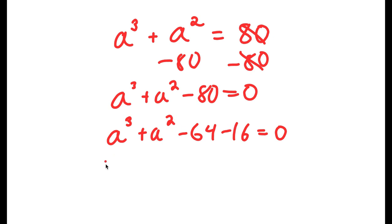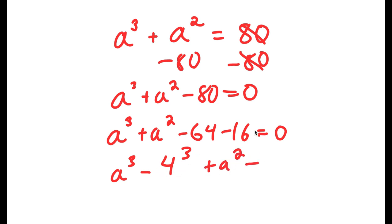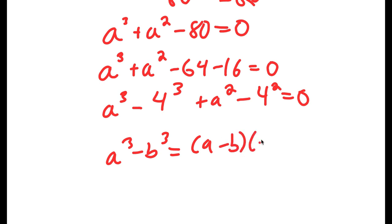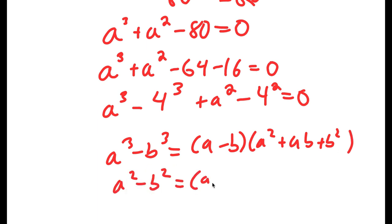Now, negative 64 I'll rewrite as negative 4 to the power of 3. So I have a cubed minus 4 cubed plus a squared minus 16, and I'll rewrite 16 as 4 squared. Now, if I have something in the form a cubed minus b cubed, that equals a minus b times a squared plus ab plus b squared. And if I have a squared minus b squared, that equals a plus b times a minus b.